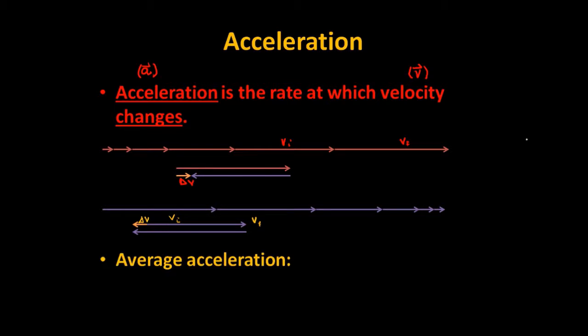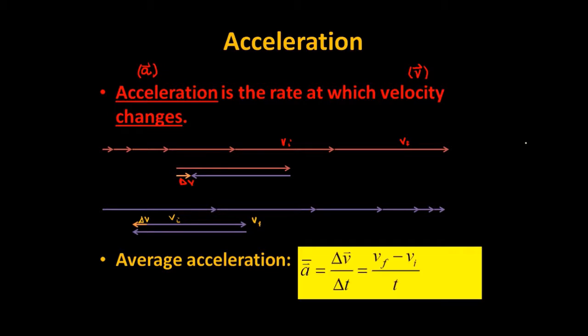So, average acceleration, remember, it involves time, is defined very simply as, note the bar to indicate average, final velocity, I'm sorry, change in velocity divided by change in time. That is, the final velocity minus the initial velocity divided by the elapsed time. Remember, we just used T for elapsed time. A really important formula, one of the fundamental ideas in kinematics.